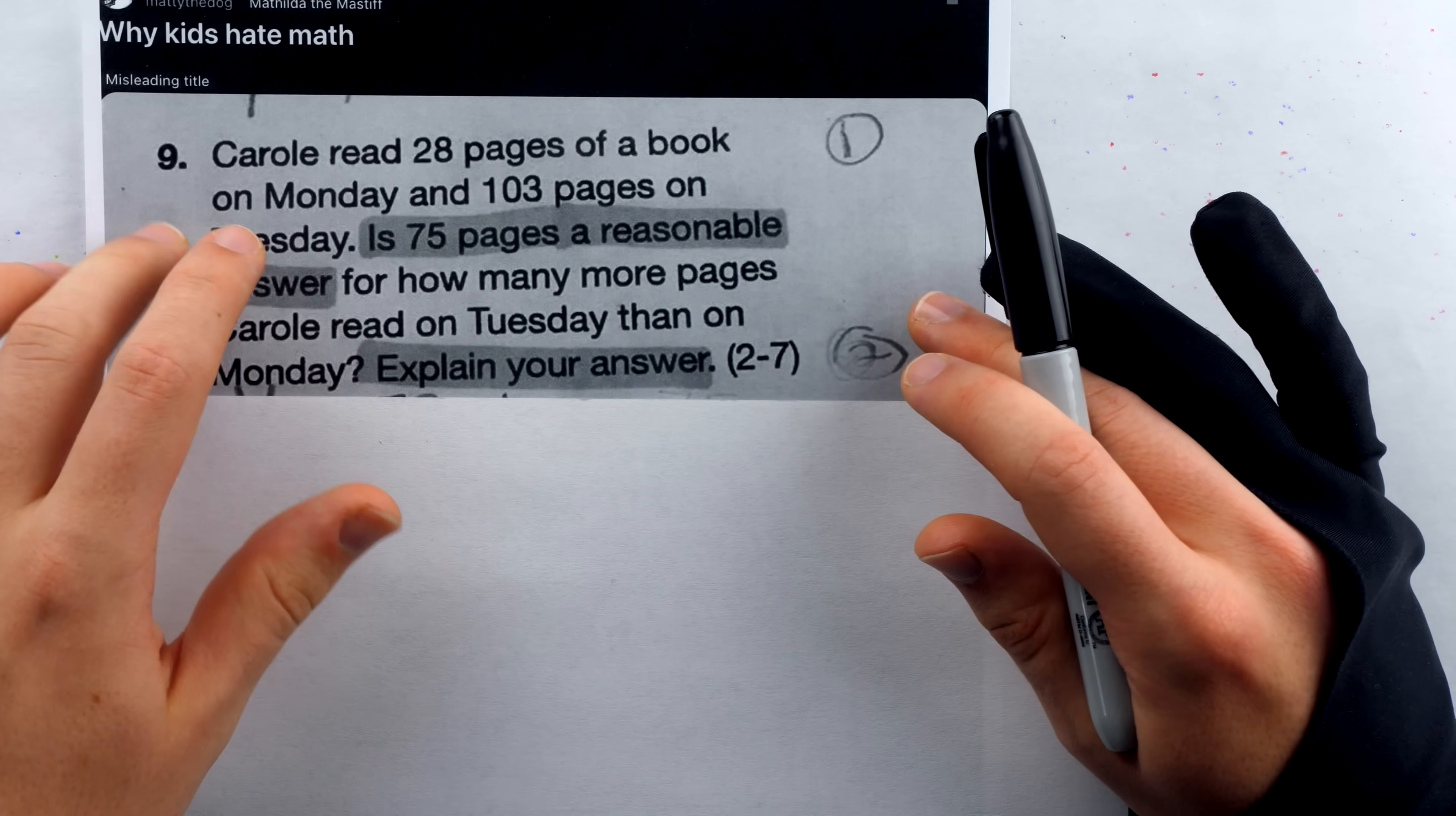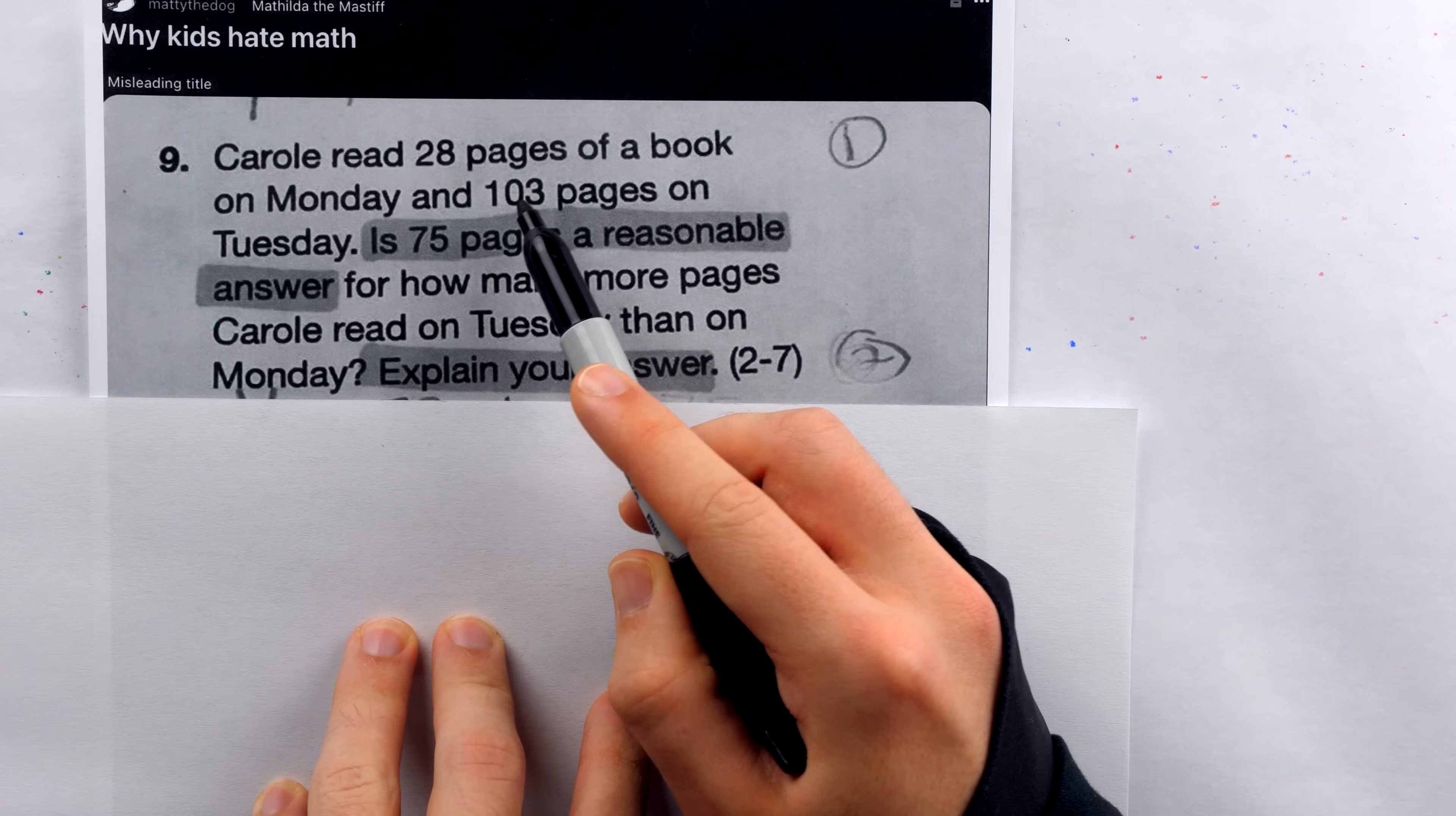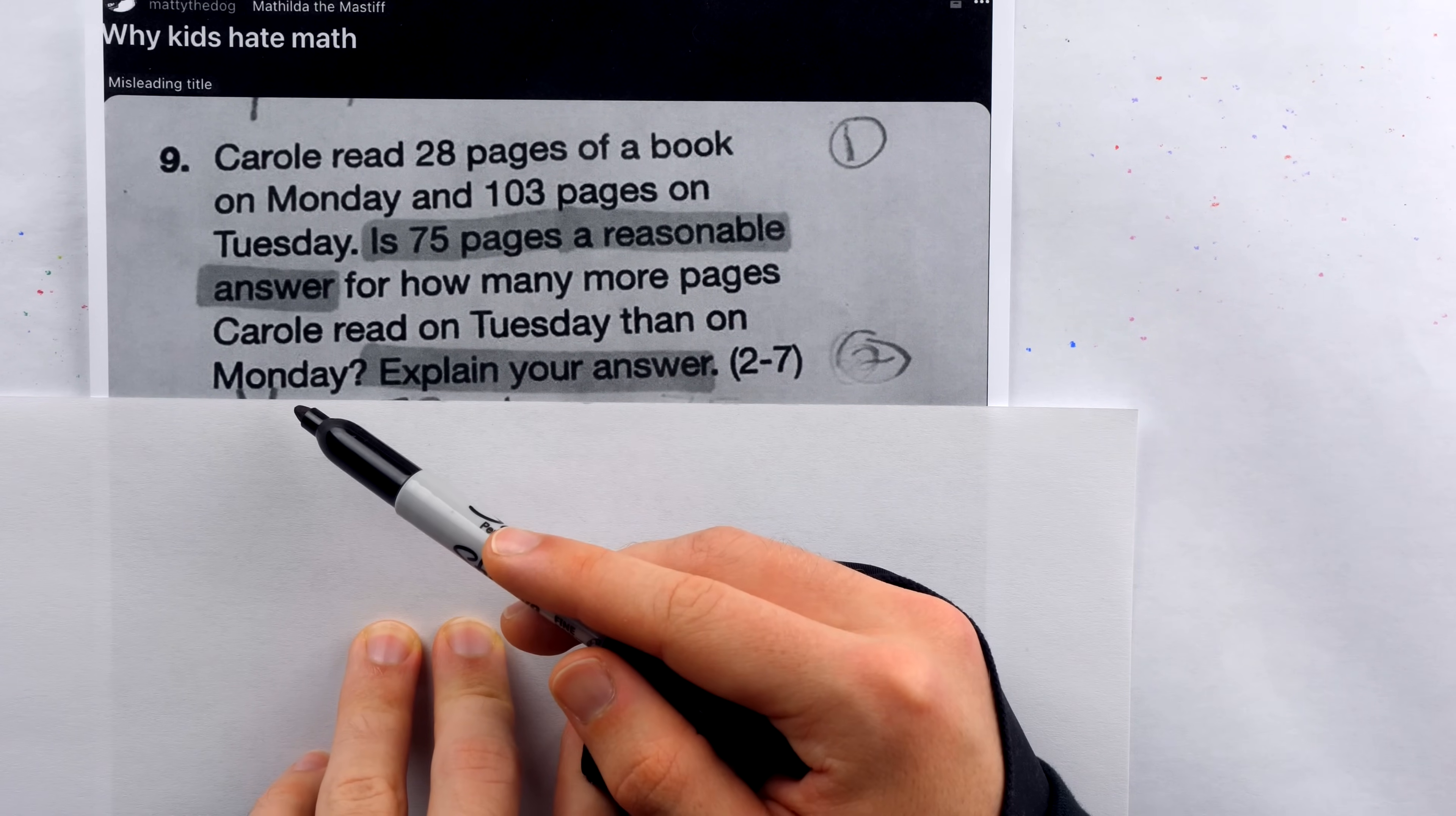Let's take a look at this question and see if you can guess what nonsense we're going to see with the answer and how it was graded. The question says, Carol read 28 pages of a book on Monday and 103 pages on Tuesday. Is 75 pages a reasonable answer for how many more pages Carol read on Tuesday than on Monday?